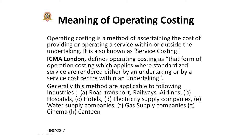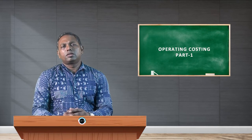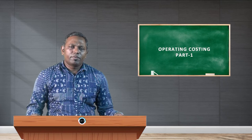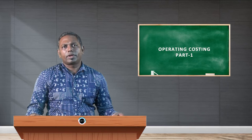Generally, these methods are applicable to the following industries: road transport, railway transport, airline transport, hospitals, hostels, electricity supply companies, water supply companies, gas supply companies, cinema halls, and canteen service providers. We can apply operating costing in those industries to ascertain the cost of services provided by the providers to the service consumers.